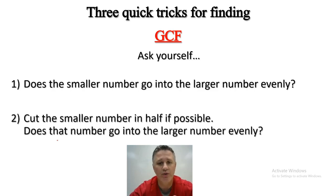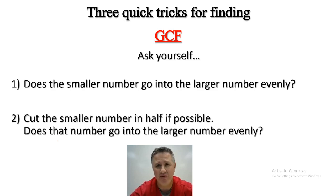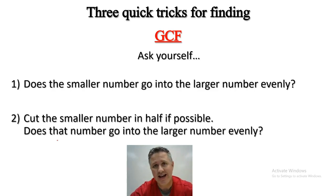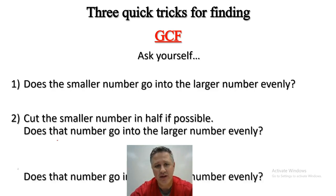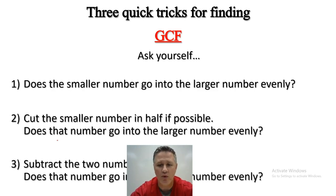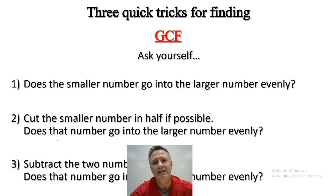If that didn't work, what you want to do is cut the smaller number in half and then ask yourself: does that go into the larger number? If it does, that's the GCF. And if that didn't work, try subtracting the two numbers — if that result goes into the larger number, then that is the GCF.